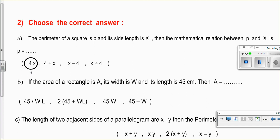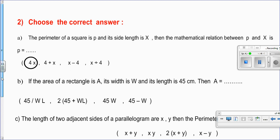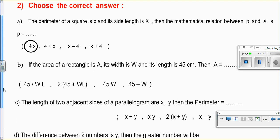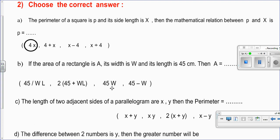Question B. If the area of a rectangle is A, its width is W, and its length 45, then A, which is area. We know area of a rectangle equals length multiplied by width. We have here the length 45. Now width is W. The area will be 45 times W, which is 45W.